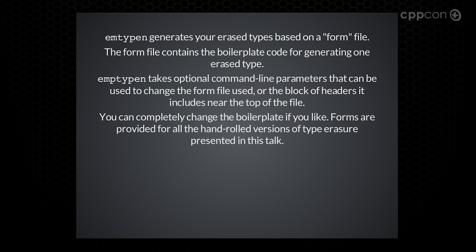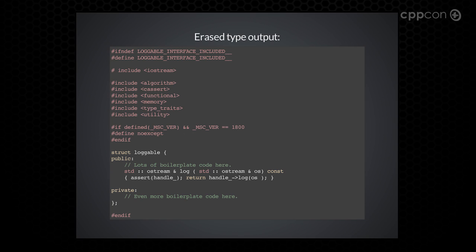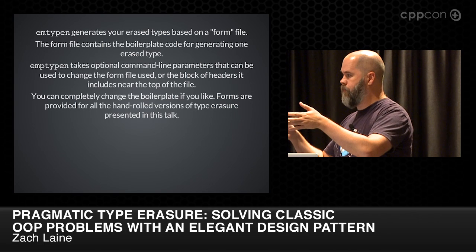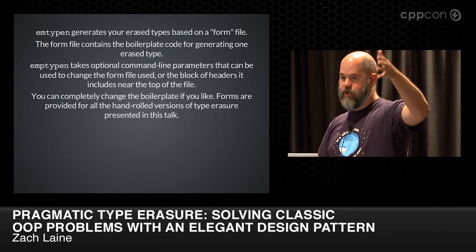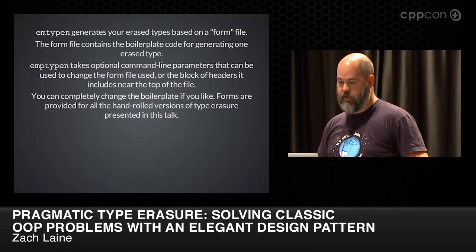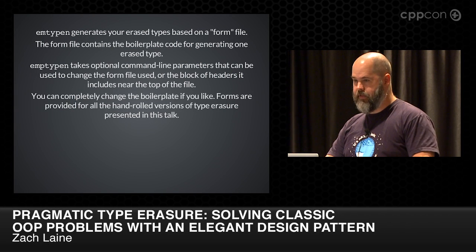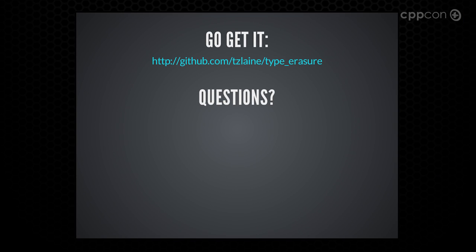Here's an example of the input: you've got an include guard, you're including iostream, and you have a Loggable type with one member — log, which takes an std::ostream. That's the real input, and this is the real output. It preserved the include iostream, the include guard, and added the other headers needed for the erased type implementation. There's a small dance for MSVC because noexcept isn't fully defined yet on Microsoft's latest compiler. The output has a straightforward implementation that looks a lot like what you saw on earlier slides. It works based on a form file — essentially all the boilerplate code with tags for the struct name that gets repeated for constructors and so on. All the versions of type erasure shown during this talk have form files available. This is not live yet but will be available very shortly after the talk.